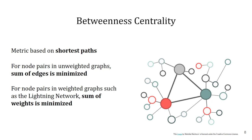A high betweenness centrality indicates that many routing paths are flowing through only a small subset of nodes, therefore leaving much of the information control to them. It also raises privacy and vulnerability concerns, as such nodes can misuse their power or can be the target of attacks that could potentially disrupt the network.